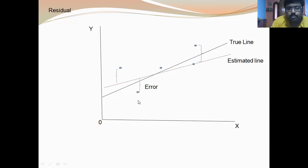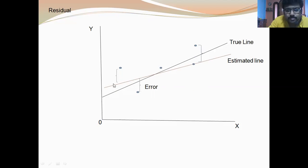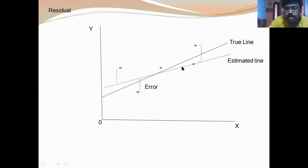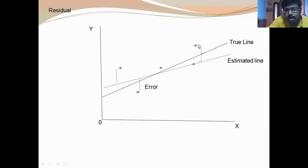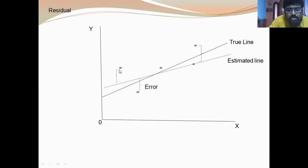Now look — this is the estimated line. In practice we do not have the true line, so we have an estimated line. The point on the estimated line and the point off the estimated line — this difference is called the residual. The point on the estimated line and the point off the estimated line is the residual.